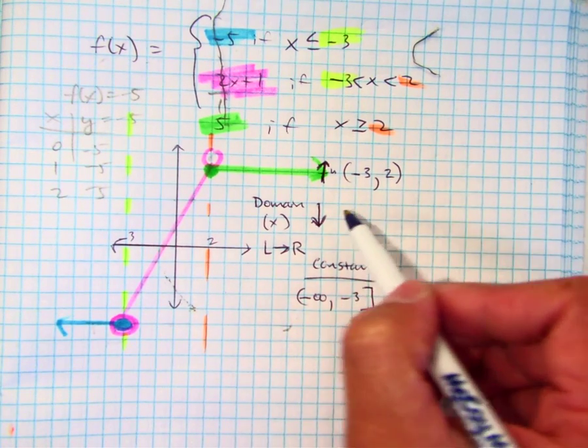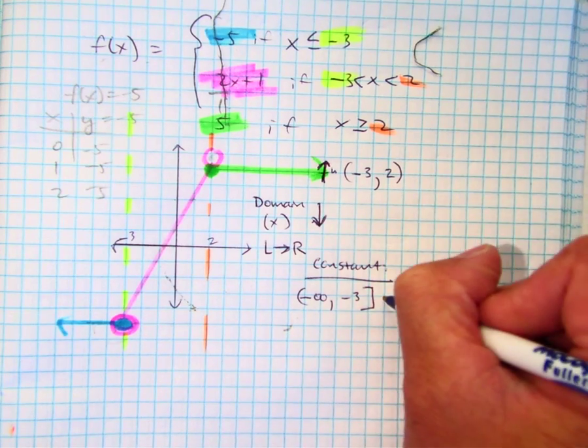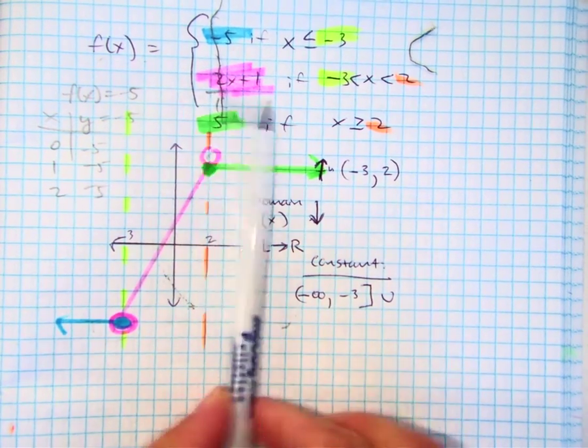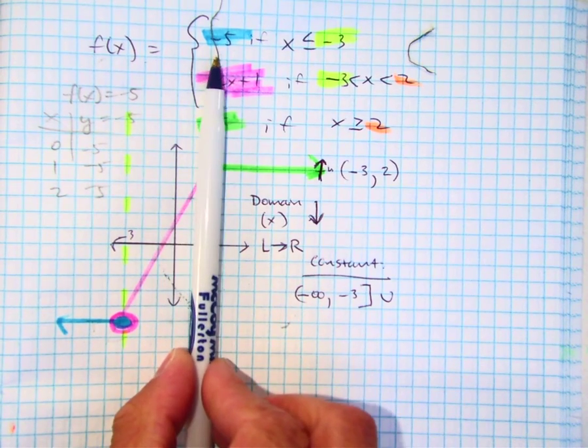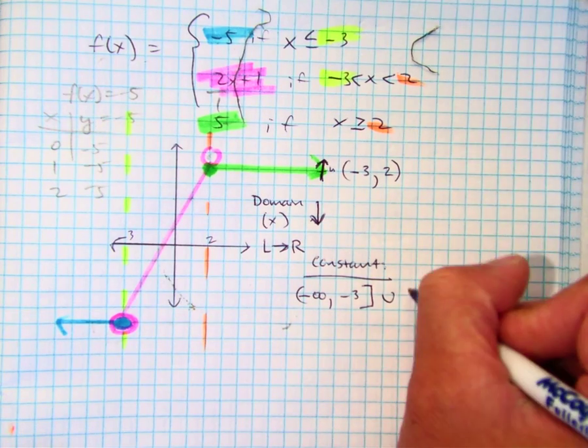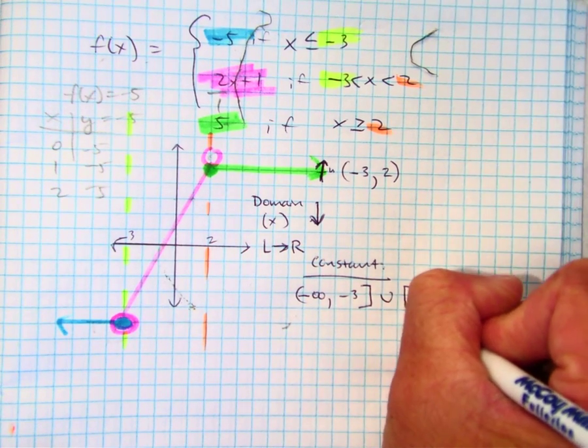Klaus, do we have any decreasings? No. Nope. Our constant, you can also say from here. What do I say in green, Klaus? Two. Two. Include two, right?